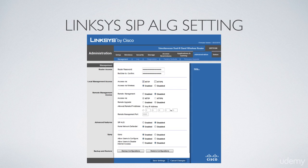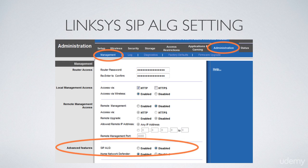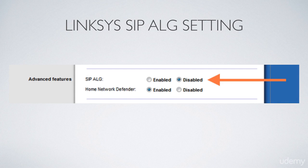The first setting we need to review is the SIP-ALG setting. It is very important that this setting is disabled both on the customer's modem and the customer's router. To find it, go to the Administration tab, then select the Management submenu. Within there, under Advanced Features, you'll see the SIP-ALG setting, which needs to be disabled as shown in this presentation.